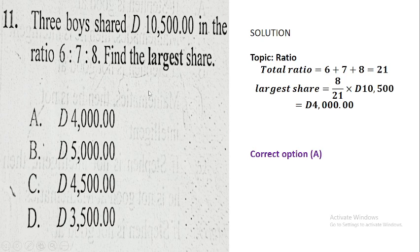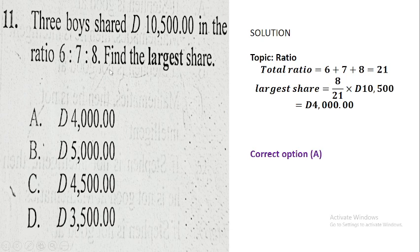Question number eleven is on ratio. Share 10,500 Dalasi in the ratio 6:7:8. Total ratio = 6+7+8 = 21. The largest share corresponds to ratio 8: (8/21) × 10,500 = 4,000 Dalasi. The correct option is the one showing 4,000 Dalasi.